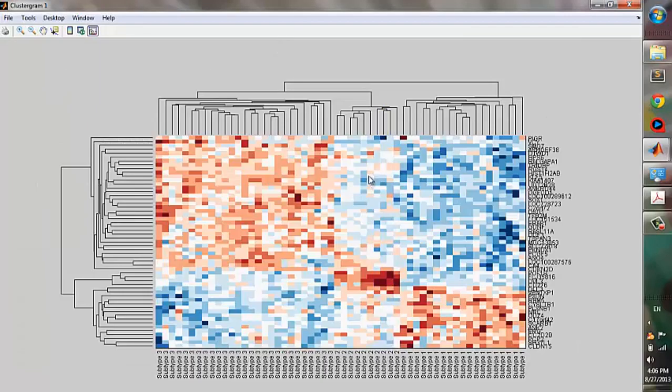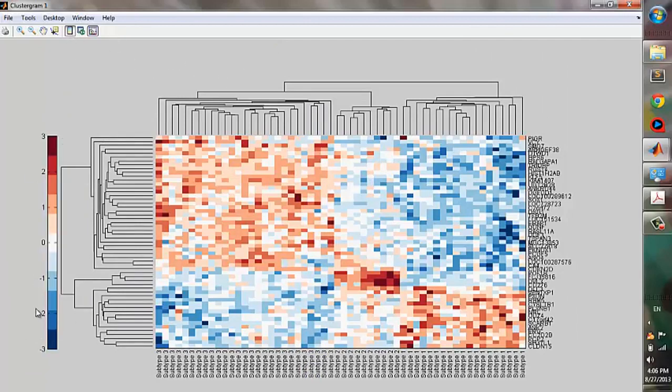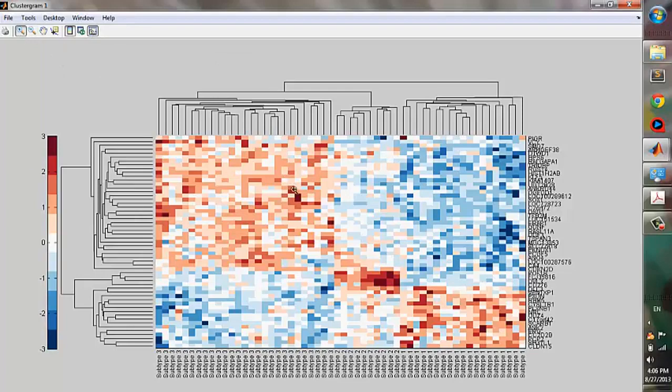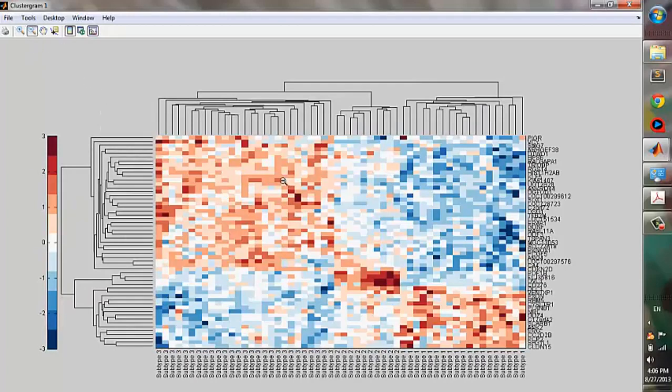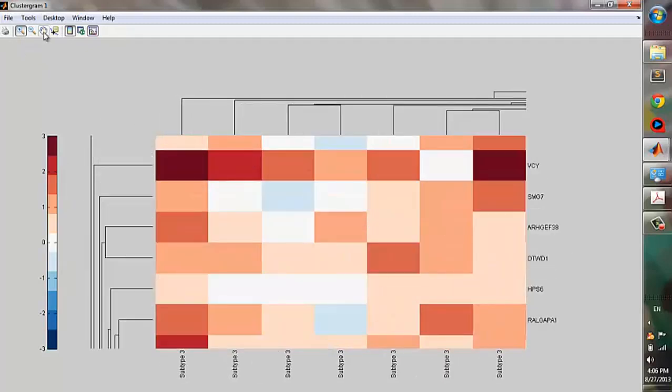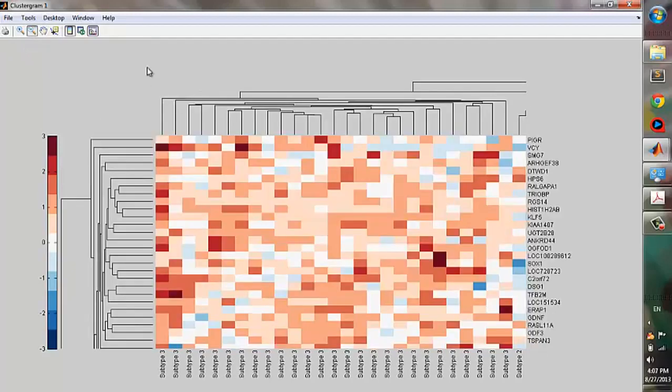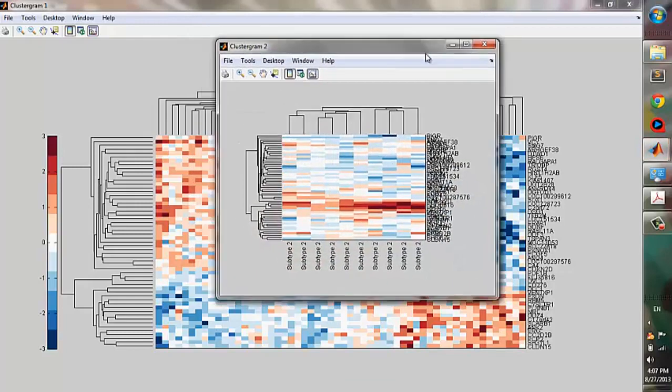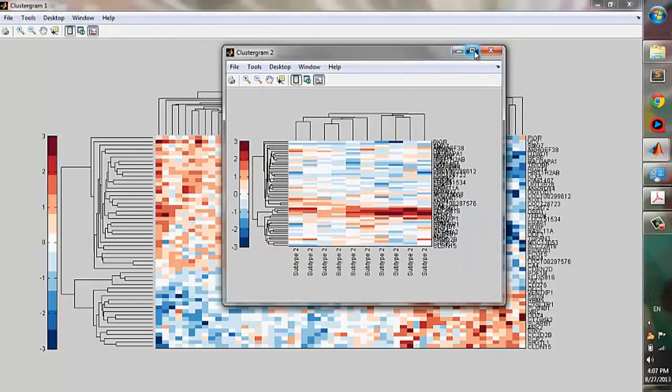After you get this clustergram, you can use this button to get a scale bar, and you can use this button to toggle the dendrogram, and this button to zoom in, and this button to zoom out. After you are in the zooming mode, you can use this button to pan over the figure. One nice thing about this clustergram is that you can select a subset of the clustergram and copy it to a new clustergram. Then you can examine this part of the clustergram in close detail.